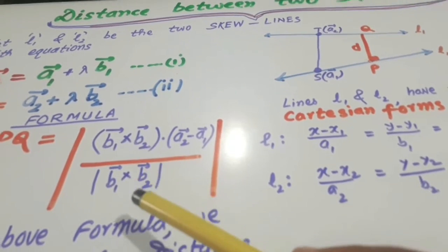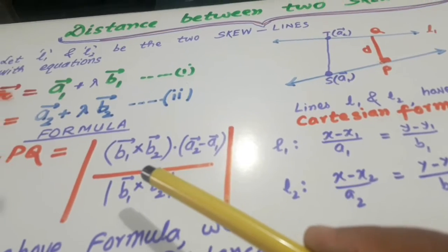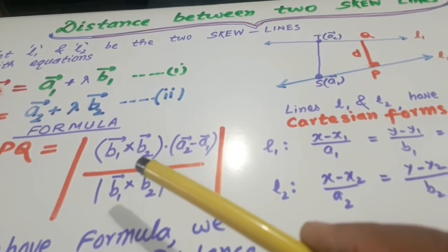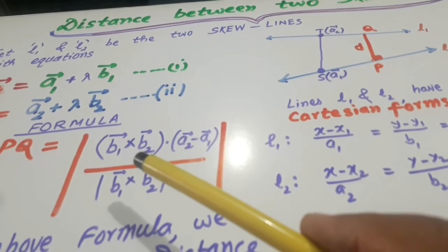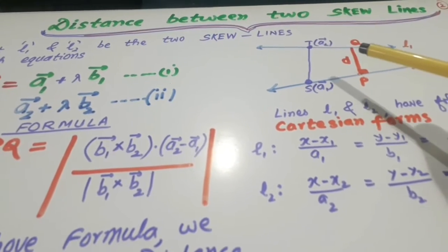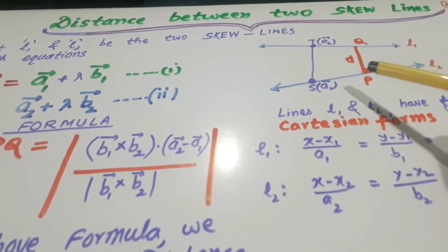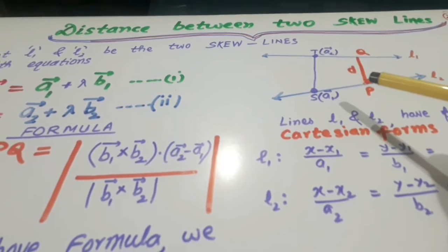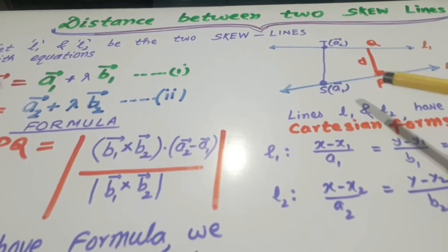As you know, B1 cross B2 is a vector perpendicular to both the vectors. So in this case, this is perpendicular on both, that is why we want to have the shortest distance. Shortest distance is always perpendicular distance.